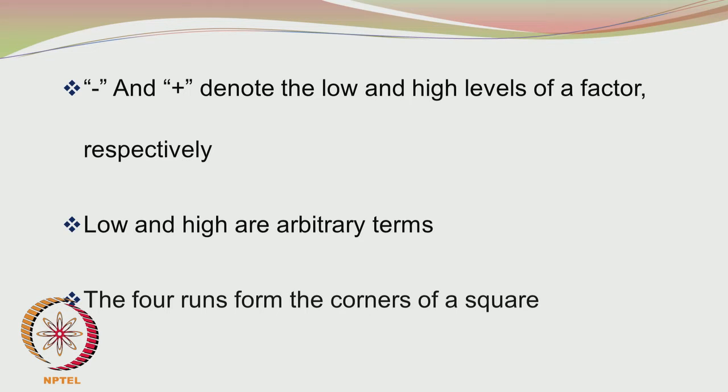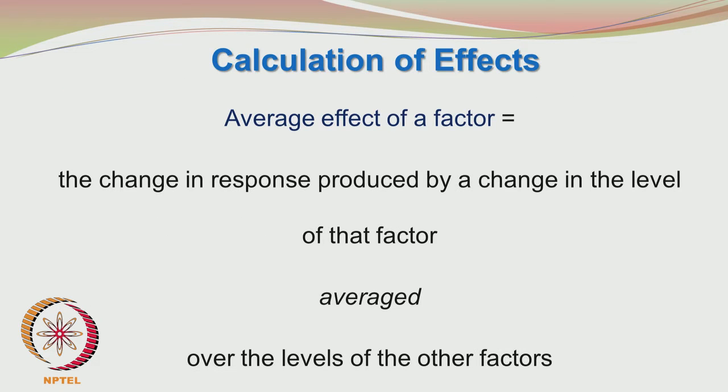The 4 runs form the corners of a square. When calculating effects, the average effect of a factor is the change in response produced by a change in the level of that factor, averaged over the levels of other factors. In factorial design, you are not keeping all other variables at constant values — they are also getting varied. The way to calculate the effects is to take the average of all cases where A moved from lower level to higher level, giving us AB - B for one combination and A - 1 for another.